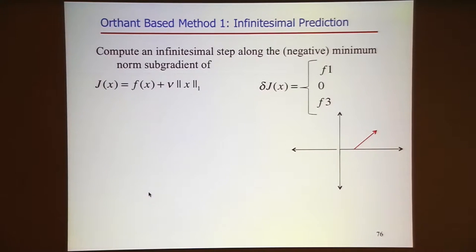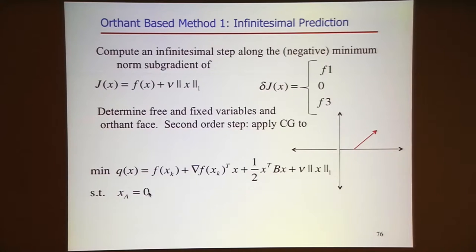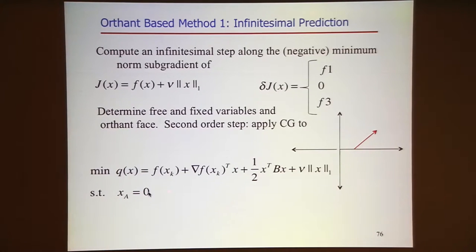Then you apply the Newton-CG method on the smooth problem within that orthant. In the orthant, each component is either plus or minus x, and variables with zero components are held fixed. Those are the variables held fixed, and you apply Newton-CG, subsampled Hessians, quasi-Newton—anything you want. That method will work well provided you do an intelligent line search. In the Newton-Lasso method, the line search is less critical; in the orthant method, it is very important.